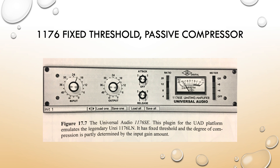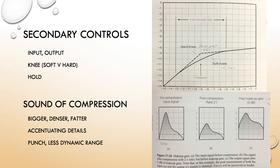The GR meter can confuse students when the needle looks wide open to the right — but that's actually where it rests at zero gain reduction. The primary controls covered, secondary controls include adjusting the knee. For a sudden loud transient, a hard knee is typically the appropriate response. If you want the compressor's work to be more transparent — for example when dealing with a voice — a soft knee is better, since you usually don't want the compression to be obvious.